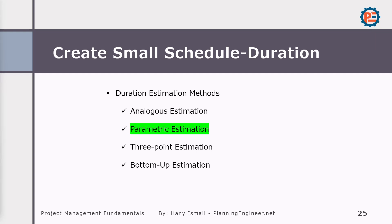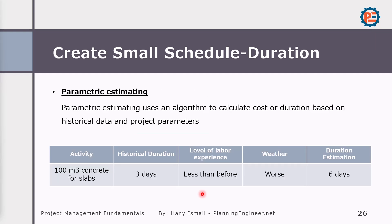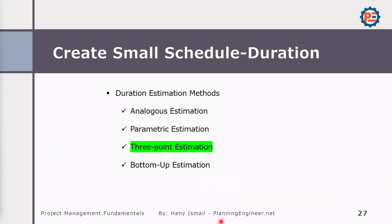The other method is parametric estimation, which uses an algorithm to calculate cost or duration based on historical data and project parameters. For example, 100 cubic meters of concrete for slabs takes three days, but this project has a special condition — the labor experience level is lower and the weather is worse — so the duration estimation becomes six days instead of three.